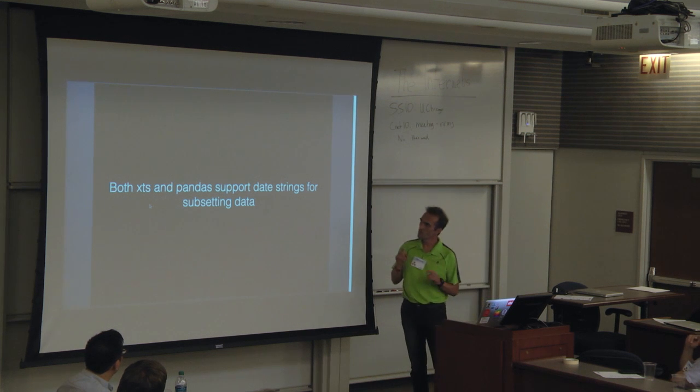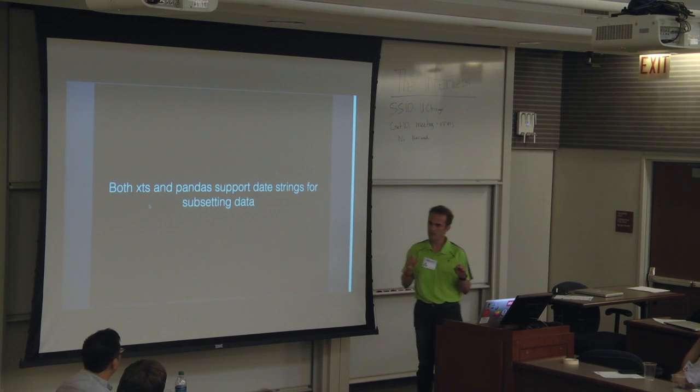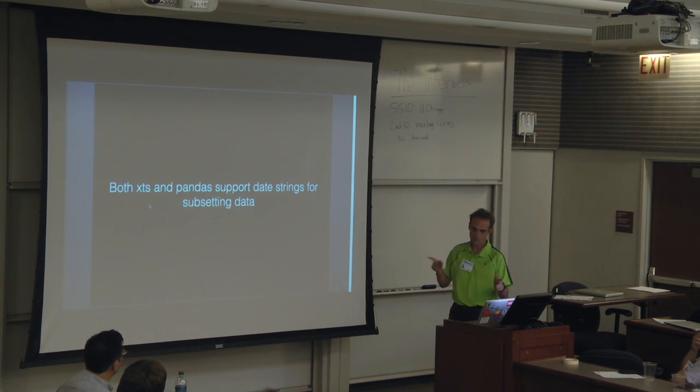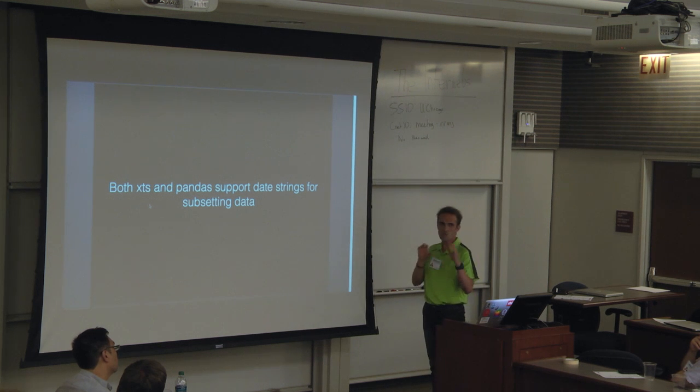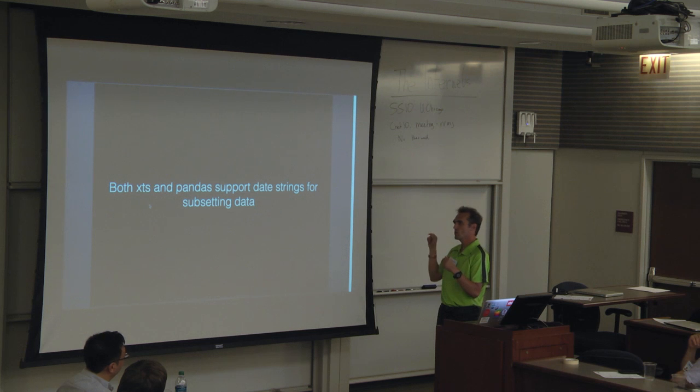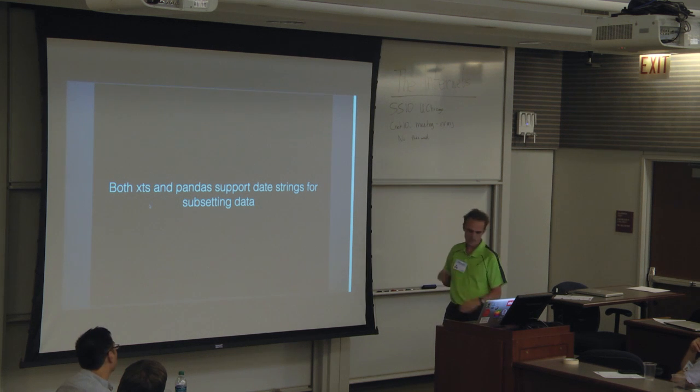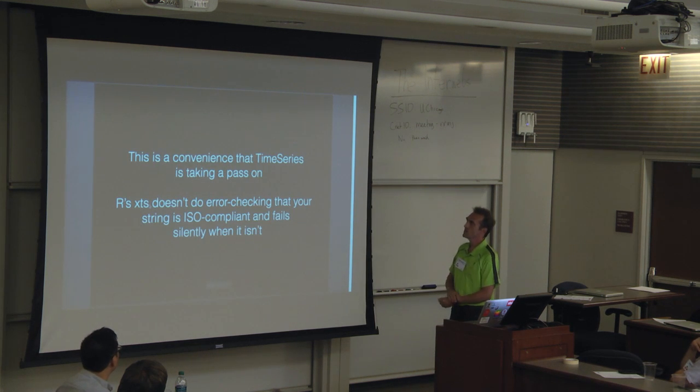Both XTS and pandas also support date strings for subsetting data. For TimeSeries, you pass a string, it's only going to give you a column. In XTS and pandas, you can pass an ISO compliant string of dates. So it would be 2001-01-05, for example, will give you the dates. TimeSeries is not going to support this. It's a convenience.